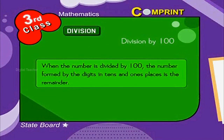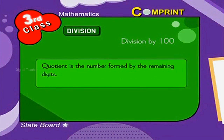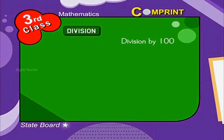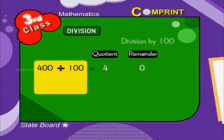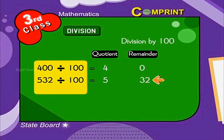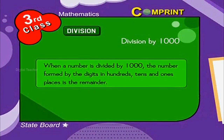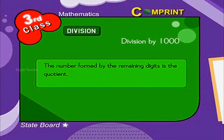When a number is divided by 100, the number formed by the digits in the 10's and 1's places is the remainder. The quotient is the number formed by the remaining digits. Look at the example: 400 divided by 100 is equal to 4 as quotient and the remainder is 0. In the number 532 divided by 100, quotient is 5 and the remainder is 32. In the above manner, when a number is divided by 1000, the number formed by the digits in the 100's, 10's, and 1's places is the remainder, and the number formed by the remaining digits is the quotient.